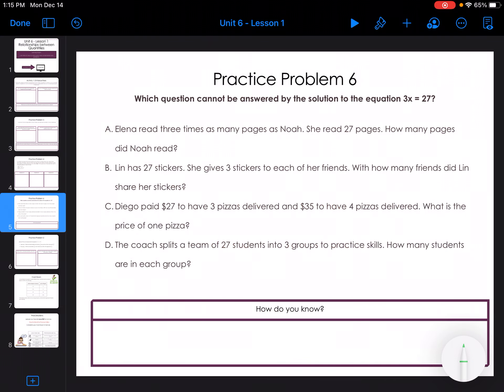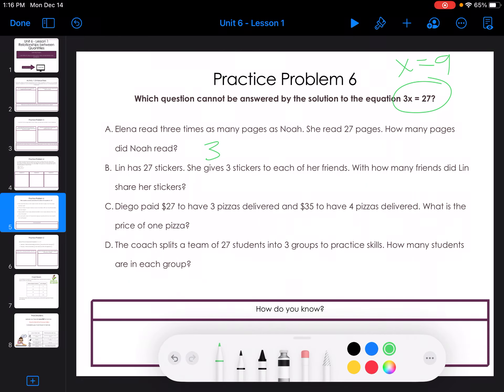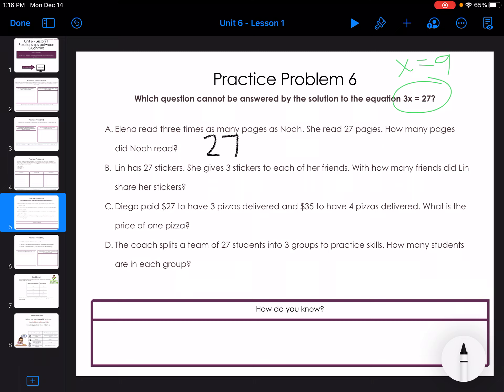The next one says, which equation cannot be answered by the equation 3x equals 27? Elena read 3 times as many pages as Noah. She read 27 pages. How many did Noah read? If I was going to solve this problem, I know that x equals 9. So 3 times Noah's pages, 3 times 9 equals 27. So A is good.